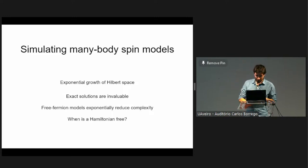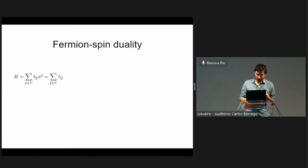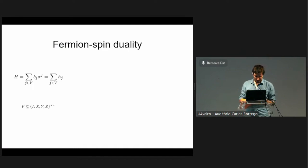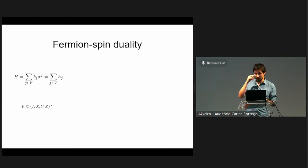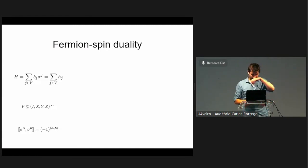What does free fermion spin duality mean? Generally when we think of spin Hamiltonians, we think of Hamiltonians with some real coupling coefficient B_J and some Pauli string Sigma_J, where Sigma_J is in some set V — I've chosen the letter V because it relates to graphs and vertices. One of the magical properties of Pauli strings is that they either commute or anti-commute depending on overlap relationships between the X's, Z's, and Y's.